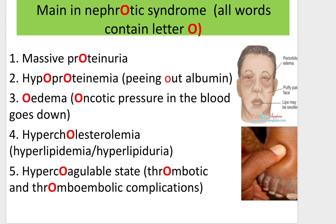The criteria of nephrotic syndrome are easier to remember because all key words contain the letter O. First, massive proteinuria. Second, hypoproteinemia — albumin is depleted. Third, edema — oncotic pressure in the blood goes down. Fourth, hypercholesterolemia with hyperlipidemia and hyperlipiduria. And fifth, a hypercoagulable state with thrombotic and thromboembolic complications.